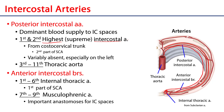Regarding anterior intercostal branches, the first six intercostal spaces receive direct branches from the internal thoracic artery. The seventh through ninth spaces come from the musculophrenic artery, which is a branch of the internal thoracic artery. The internal thoracic artery descends and then branches into the superior epigastric artery and the musculophrenic artery.